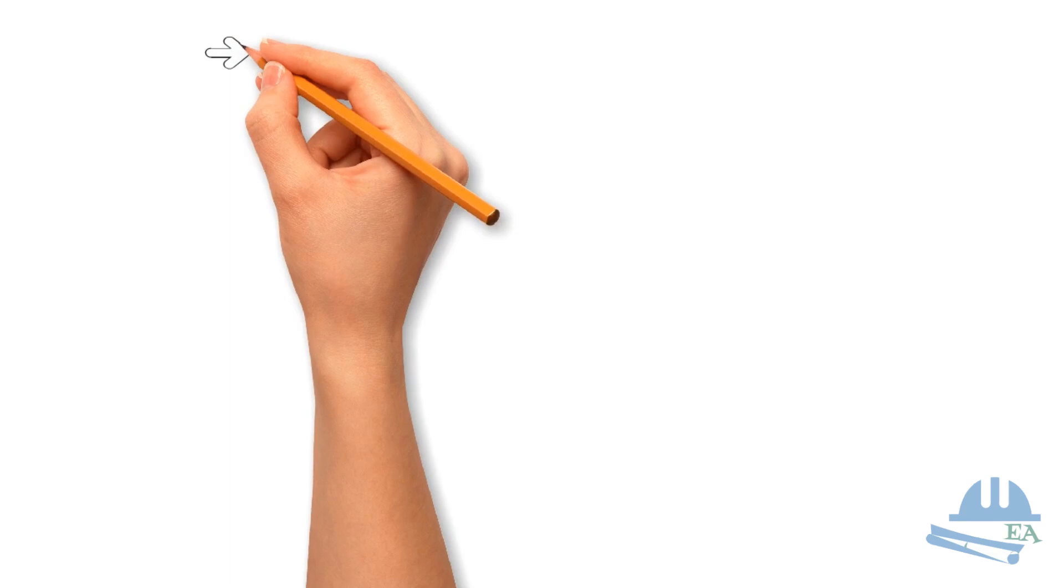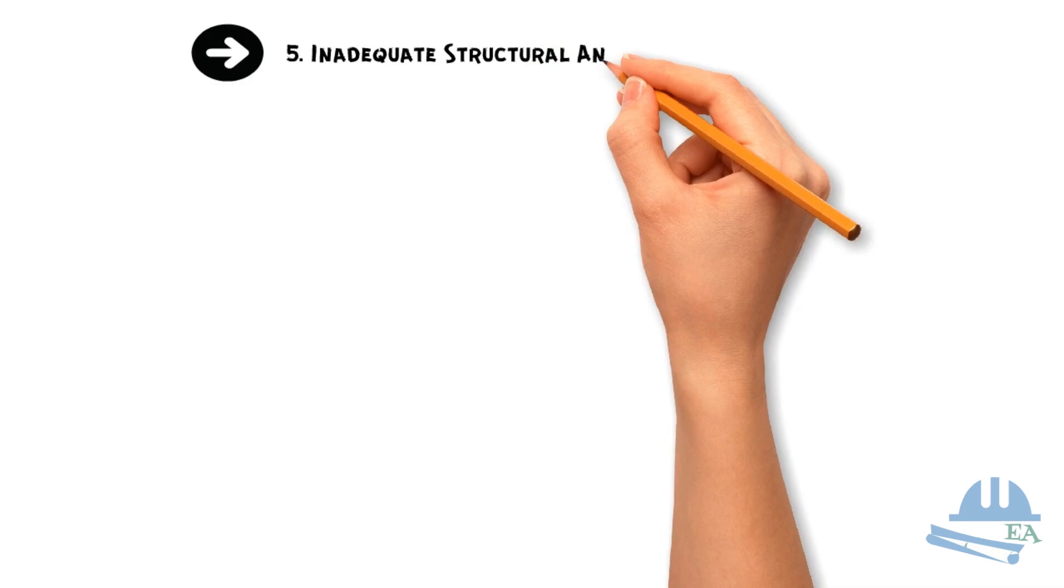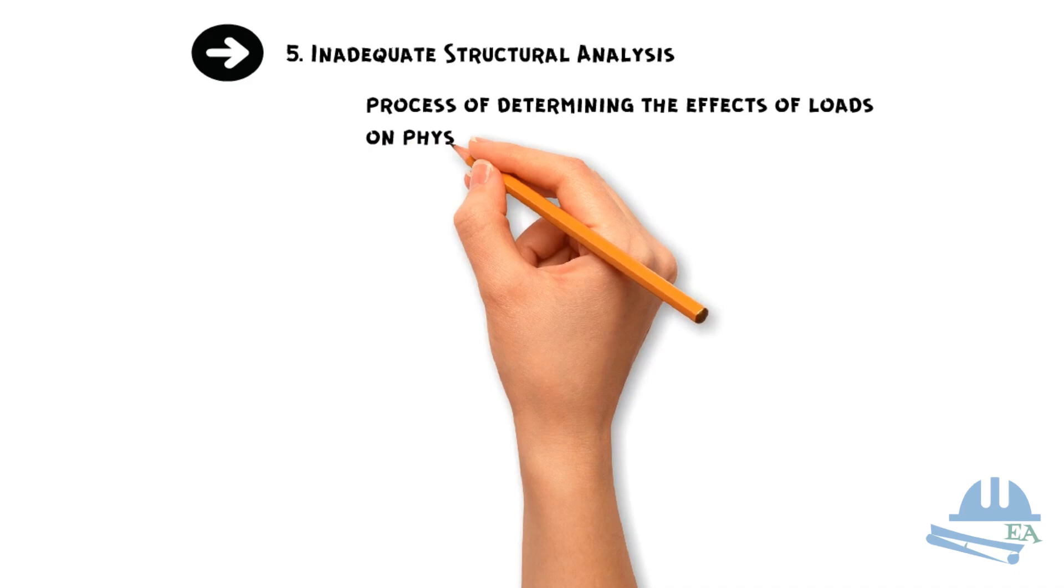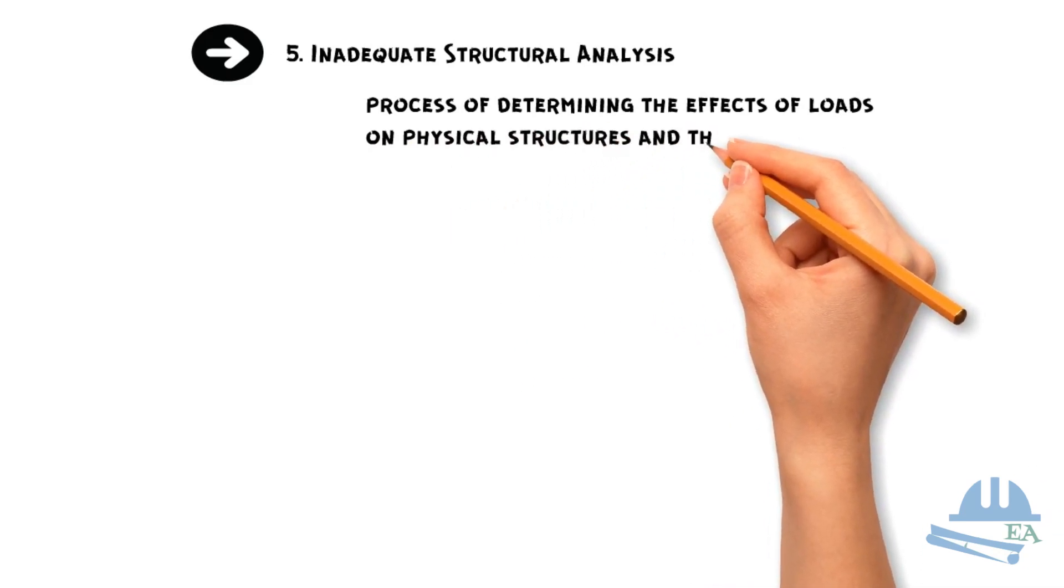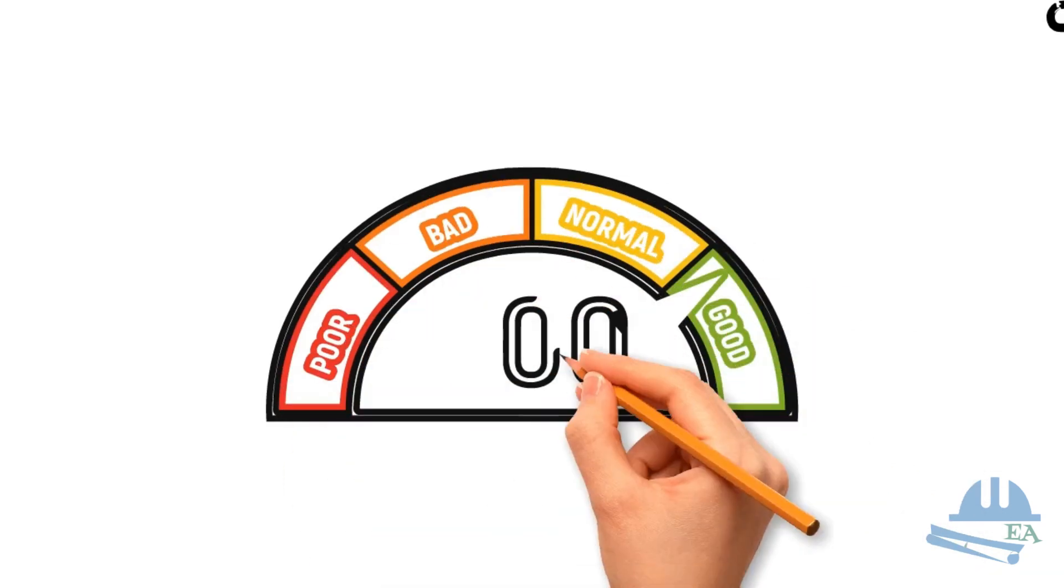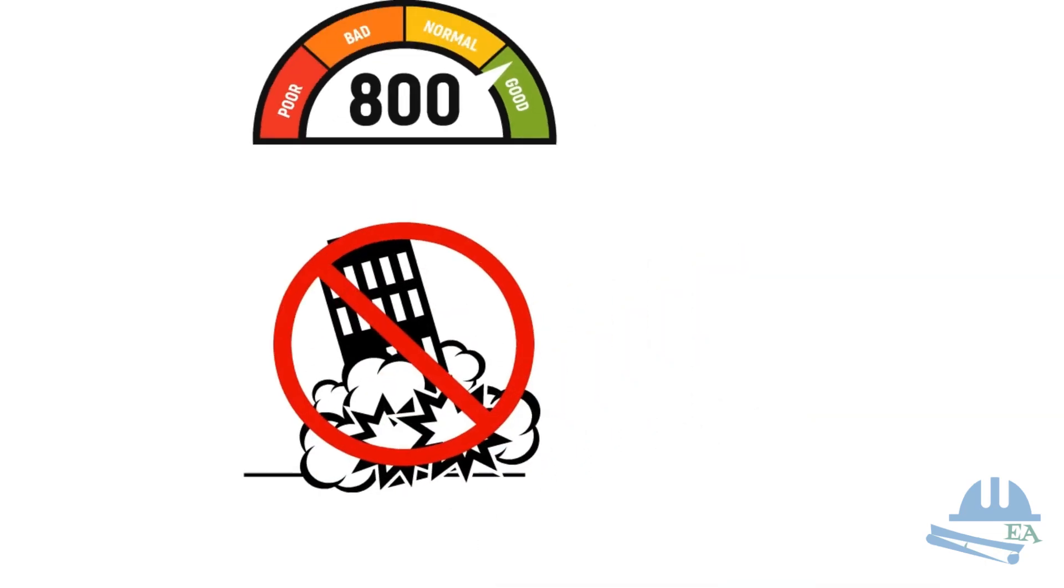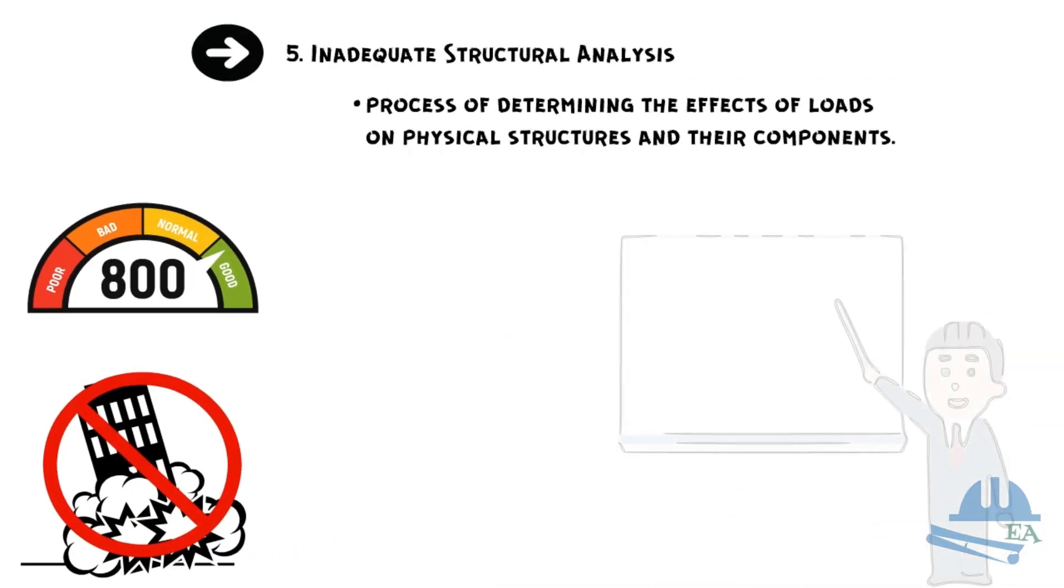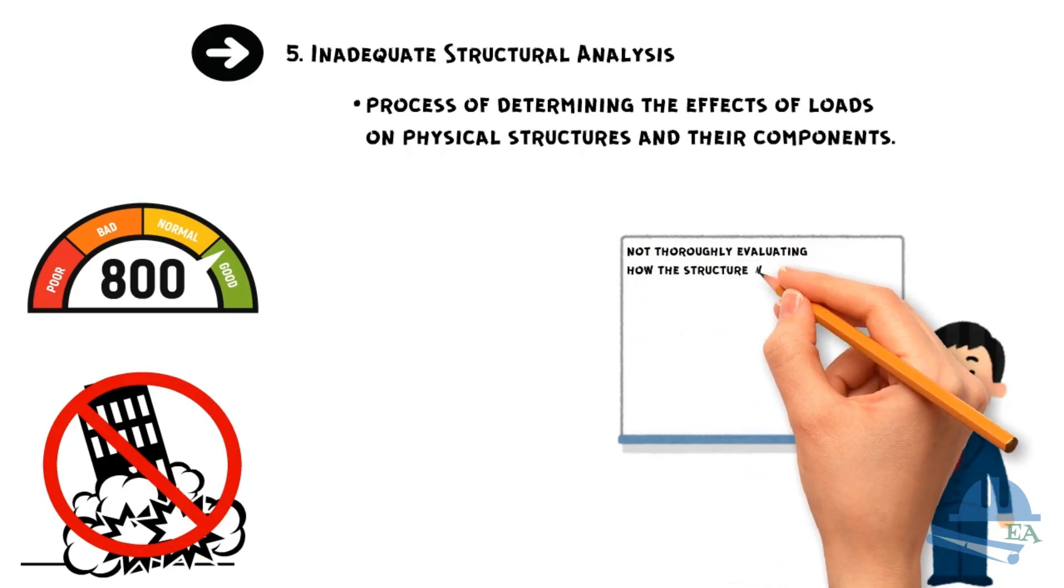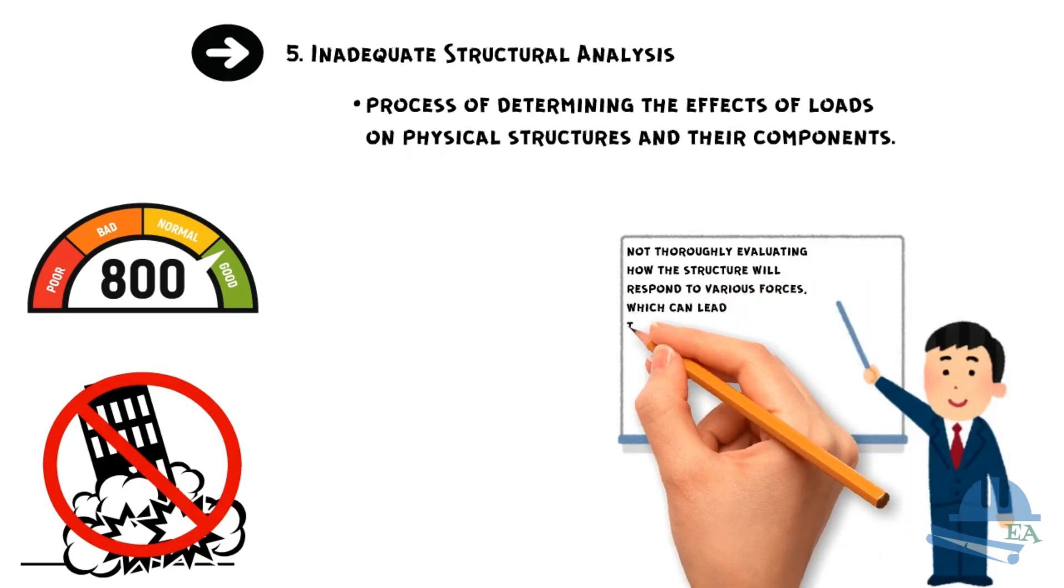Now, let's move on to the fifth common mistake in structural design, inadequate structural analysis. Structural analysis is the process of determining the effects of loads on physical structures and their components. This analysis ensures that the design can withstand all applied loads without failure or excessive deformation. Inadequate structural analysis means not thoroughly evaluating how the structure will respond to various forces, which can lead to serious issues down the line.